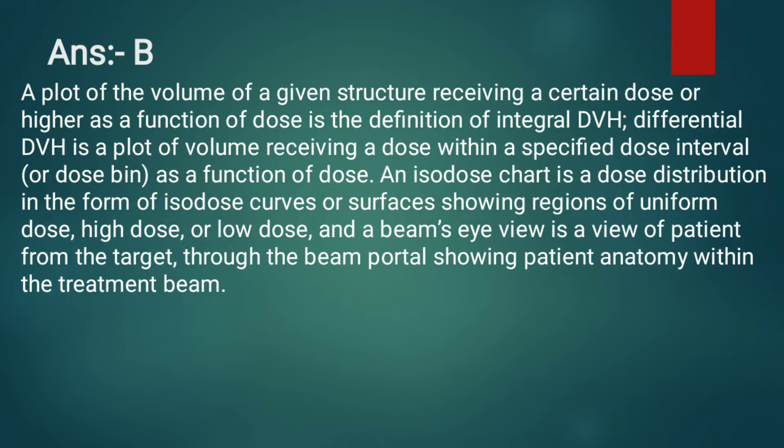An isodose chart is a dose distribution in the form of isodose curves or surfaces showing regions of uniform dose, high dose, or low dose. A beam's eye view is a view of the patient from the target to the beam portal, showing patient anatomy within the treatment beam.